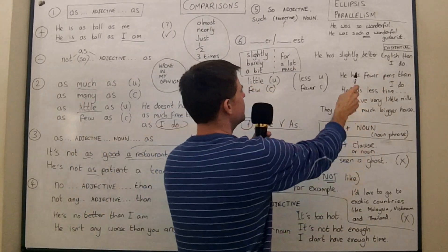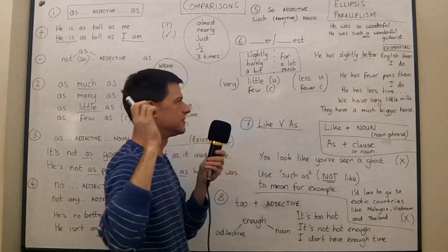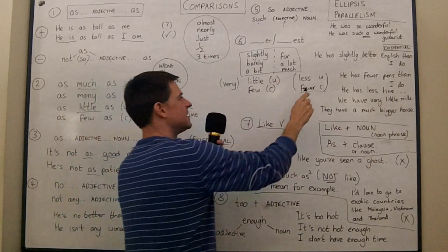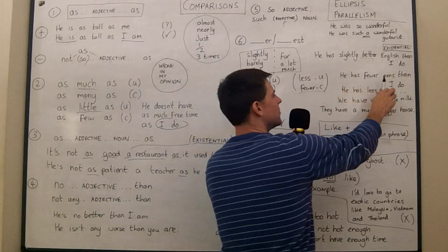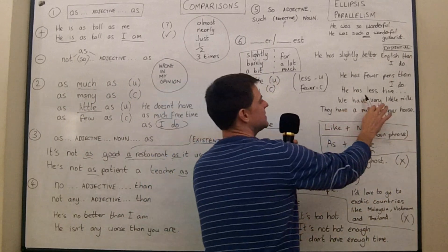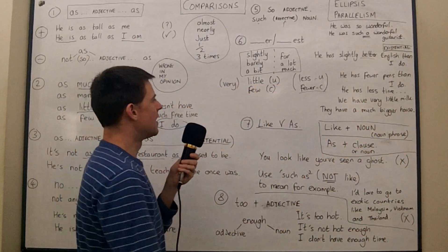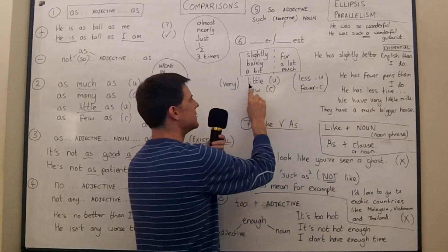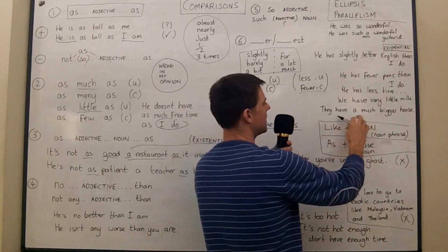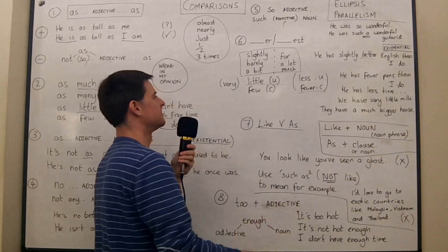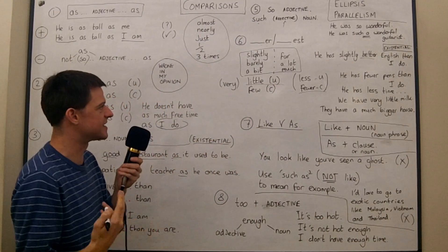We could also say he has fewer pens than I do. And it must be fewer, not less. Lots of mistakes here with less. Less is uncountable. Fewer is countable. And so he has fewer pens than I do. But he has less time than I do. OK. We have very little milk because milk is uncountable. Or they have a much bigger house. They have a few more cars. Whatever. If you're comparing in that kind of sense.